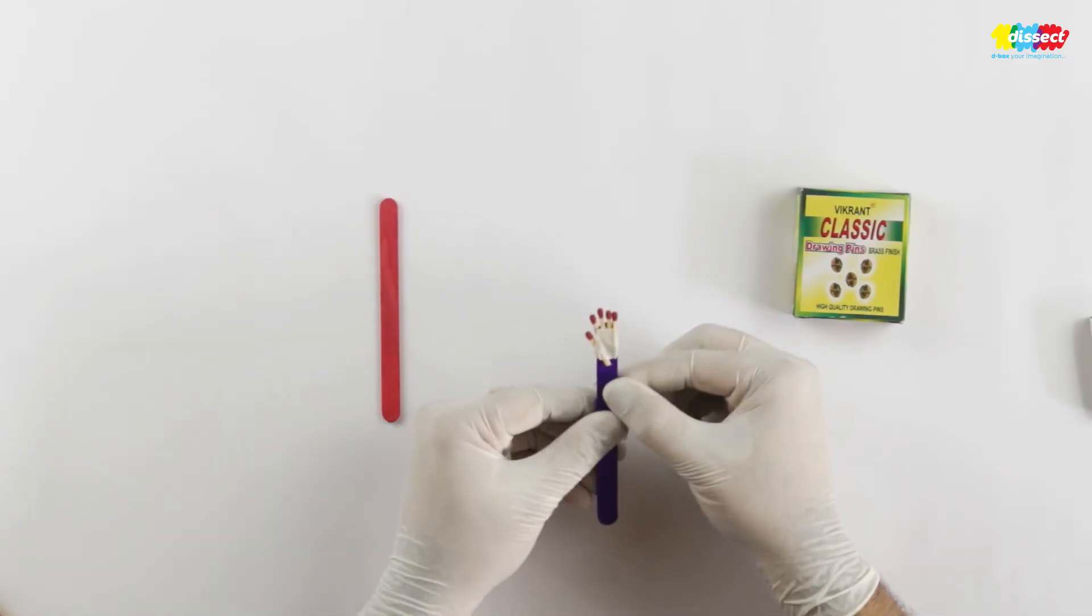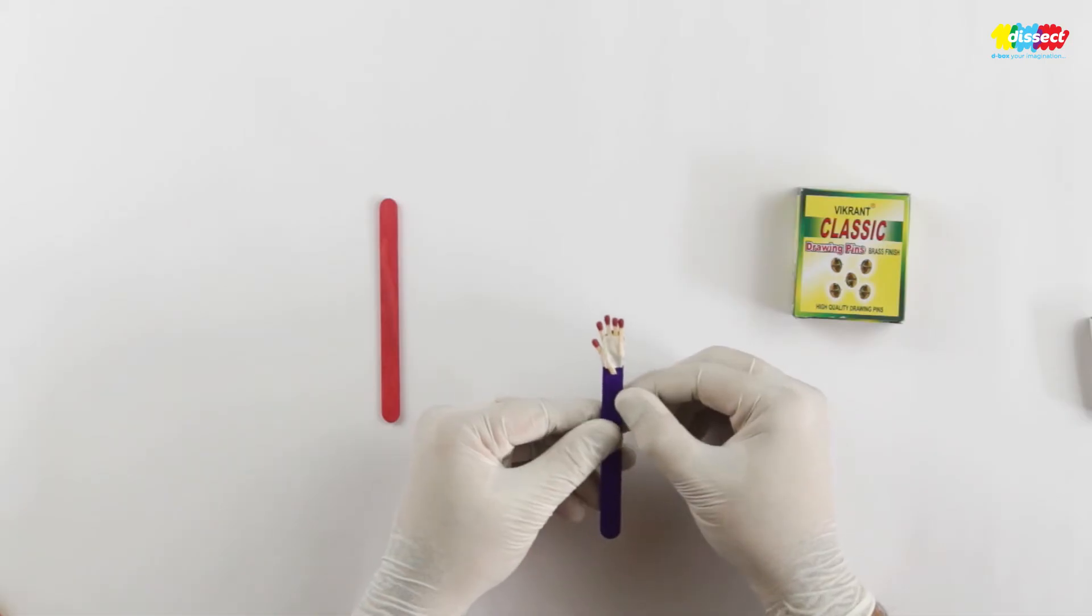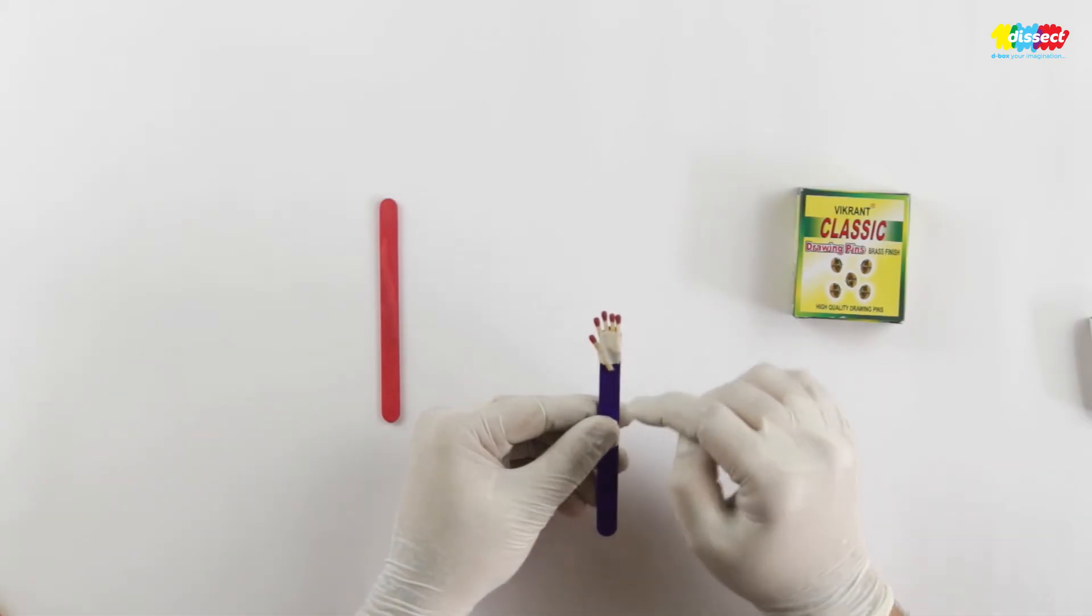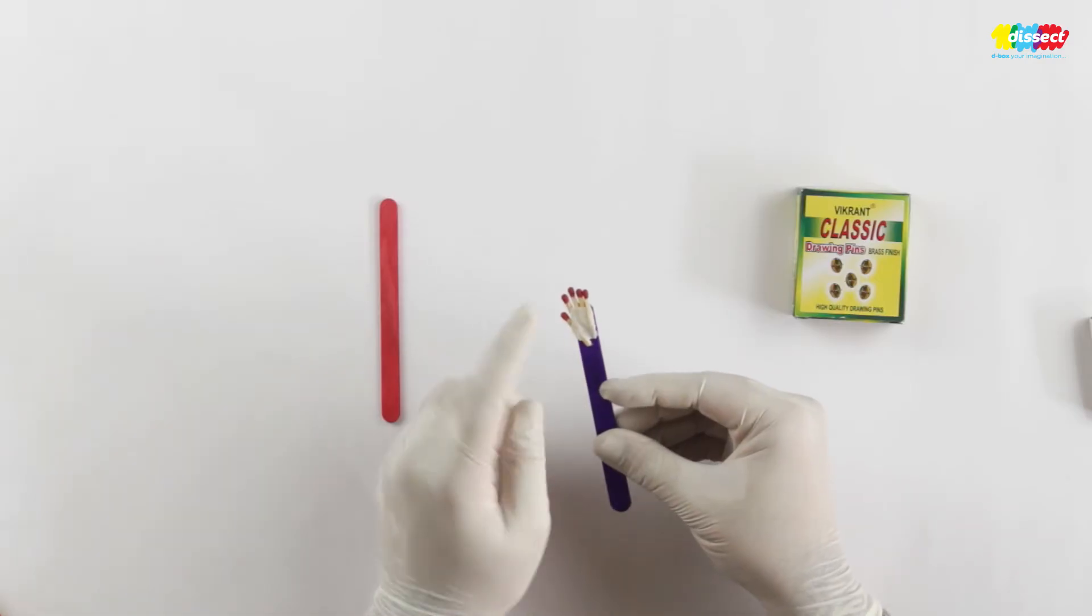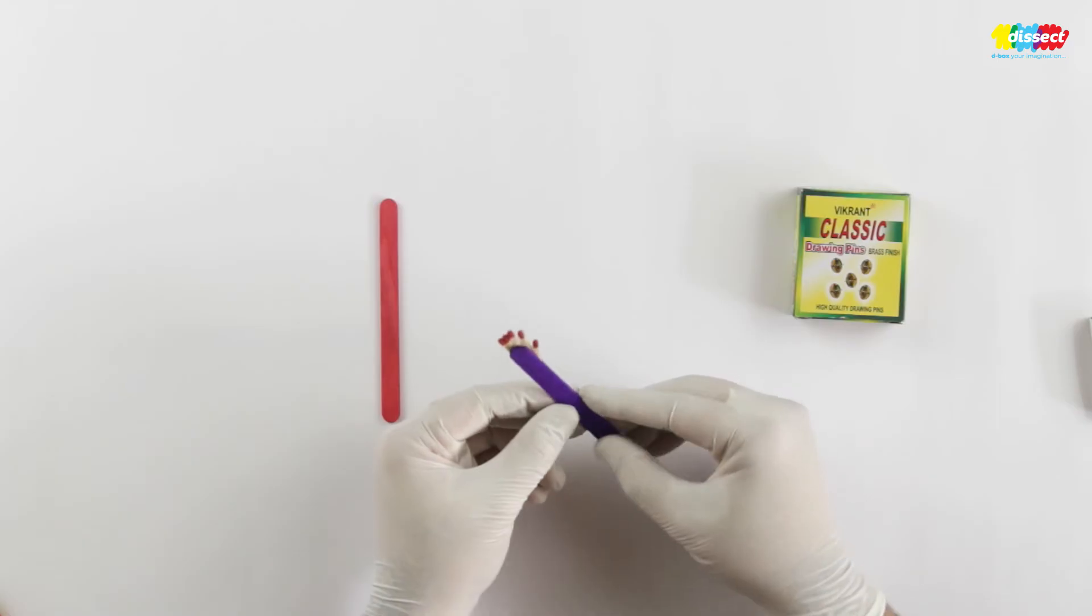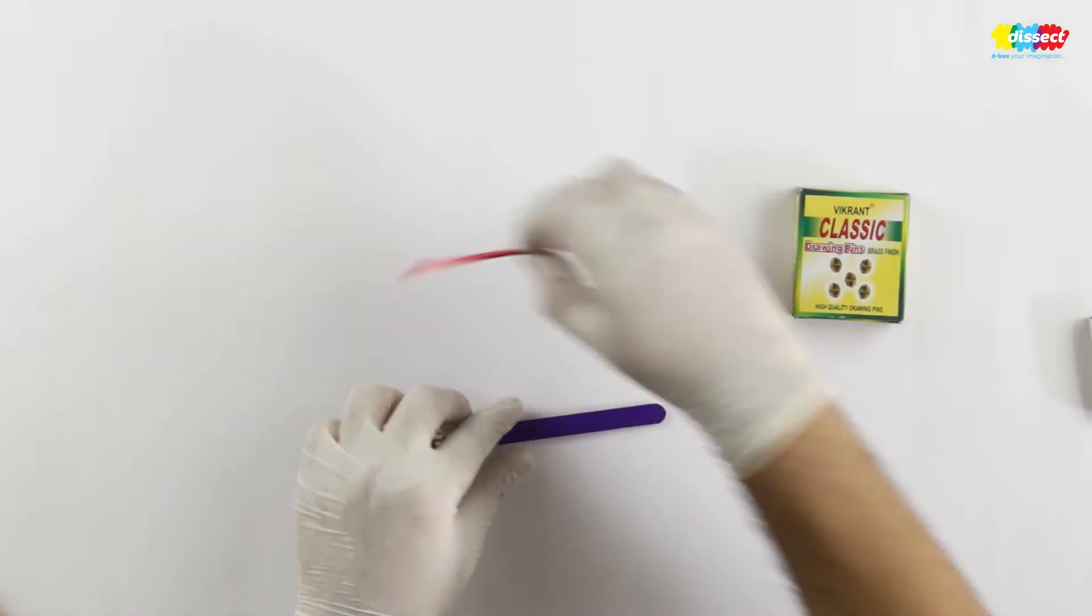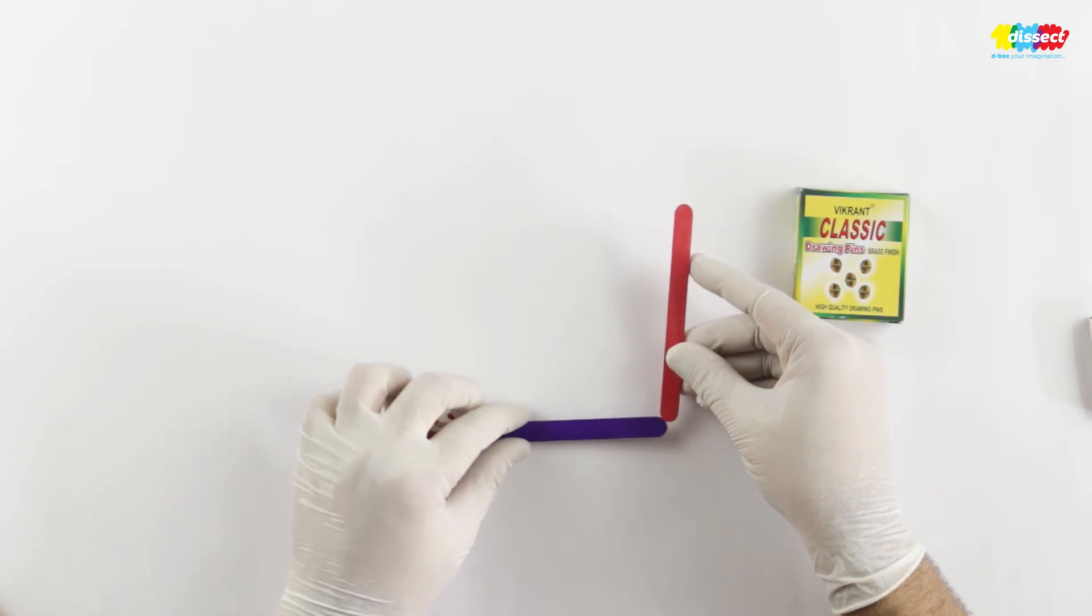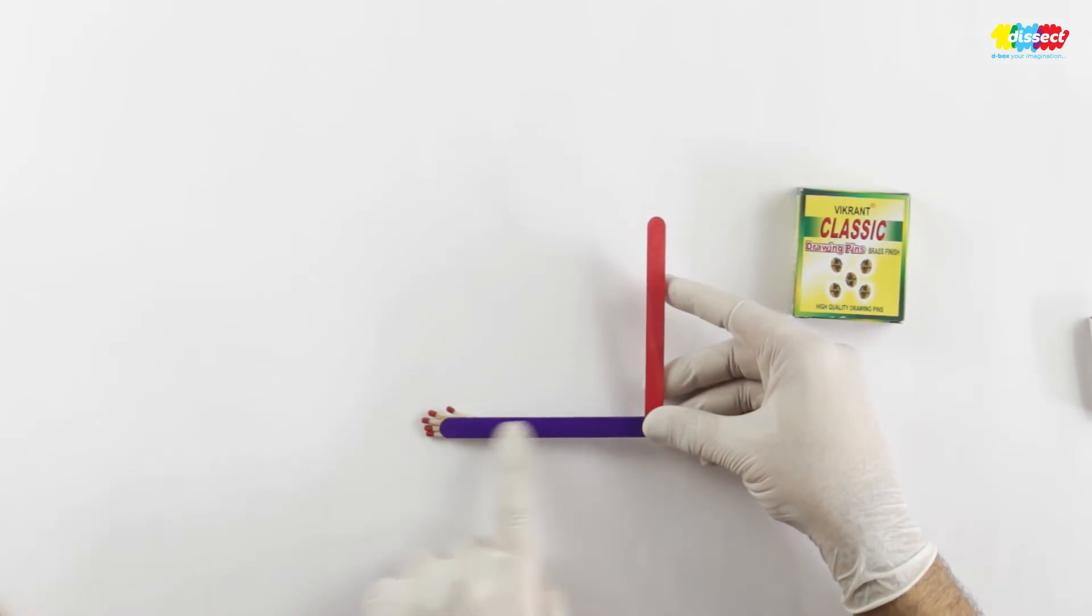We have made a very simple model of a hand. We have fixed the mat sticks and I have also put some cello tape on that so it will be fixed. We will use this as the forearm and we are going to affix this another stick. So this is our forearm and this is our upper arm.